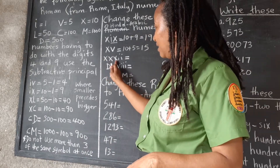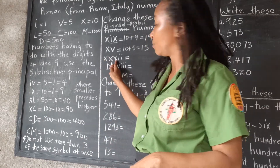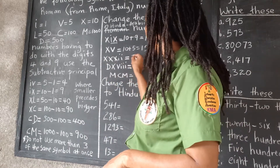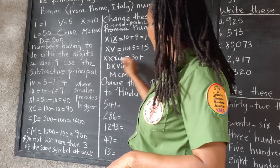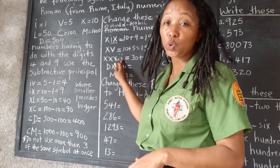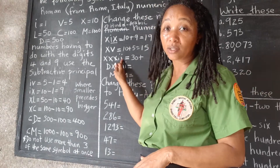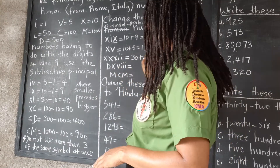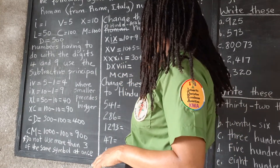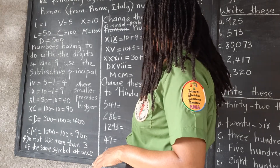Here we have 3 tens, so that's 30, and we have 2 ones. 30 plus 2 is 32.